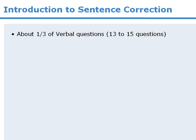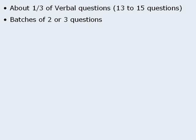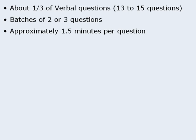To begin, about one-third of all questions in the verbal section of the GMAT will be sentence correction questions, and these questions will typically appear in batches of two or three in a row. The other two verbal question types — reading comprehension and critical reasoning — typically require more time to answer, so I suggest that you spend no longer than 1.5 minutes on each sentence correction question.